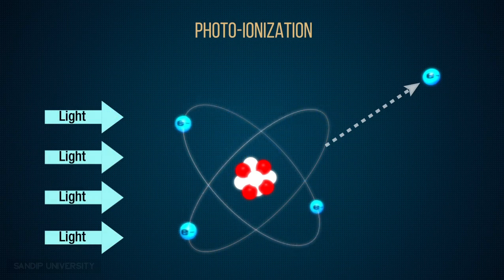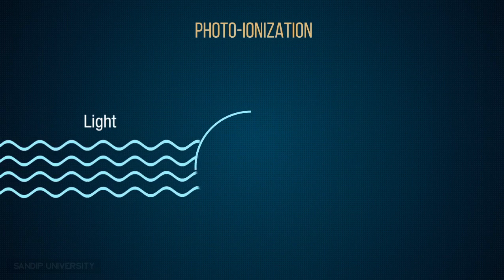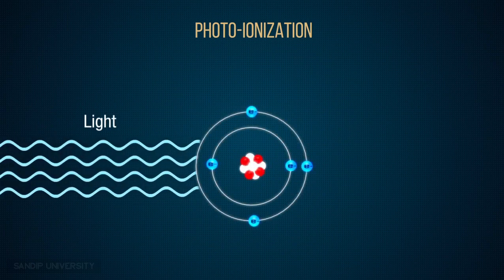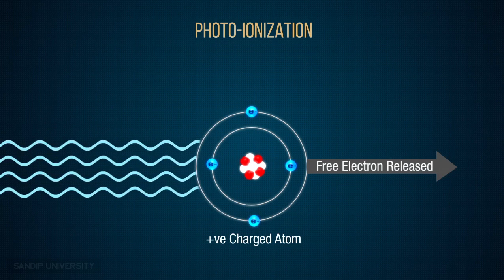In photo-ionization, the electromagnetic radiation of light hits the matter, resulting in transfer of energy to atomic structure. A high-energy photon collides with a neutral atom, resulting in transfer of energy from photon to neutral atom. The process results in disassociation of matter into electrically charged particles.